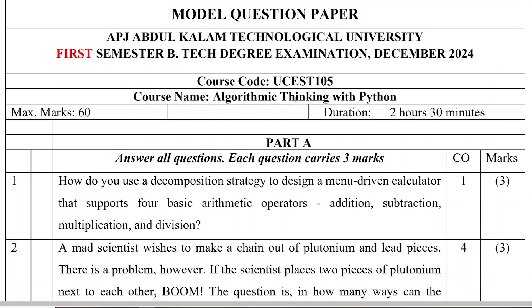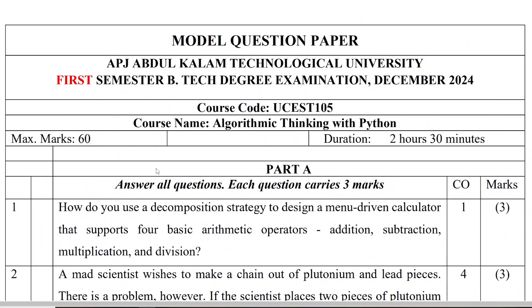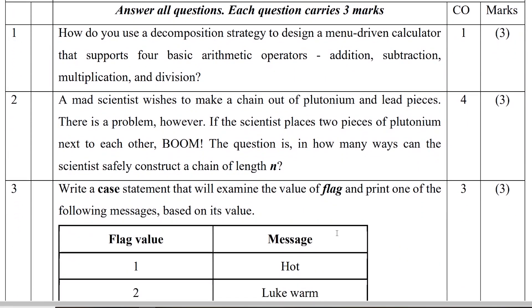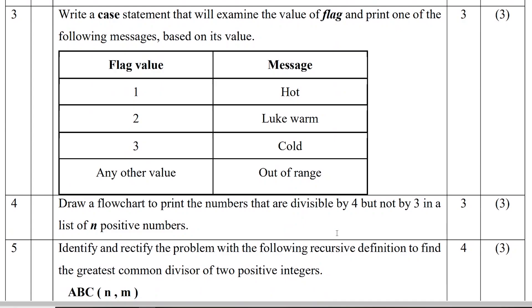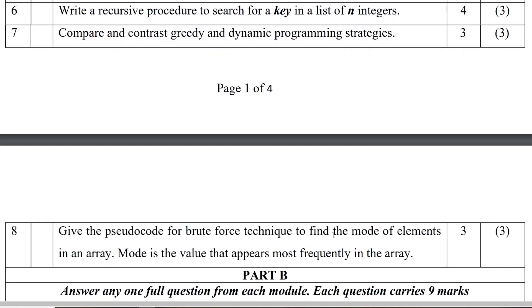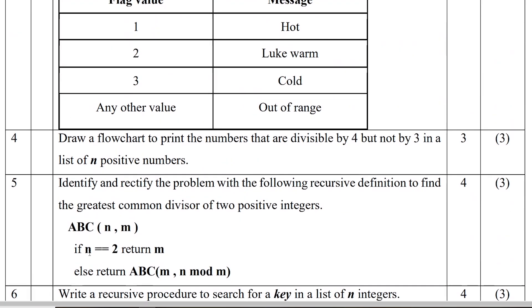Part A has no choice — all questions are compulsory. Each question is 3 marks. In each module, there are 2 questions. So if we have 4 modules, there are 8 questions in total. All questions are compulsory, each carrying 3 marks.